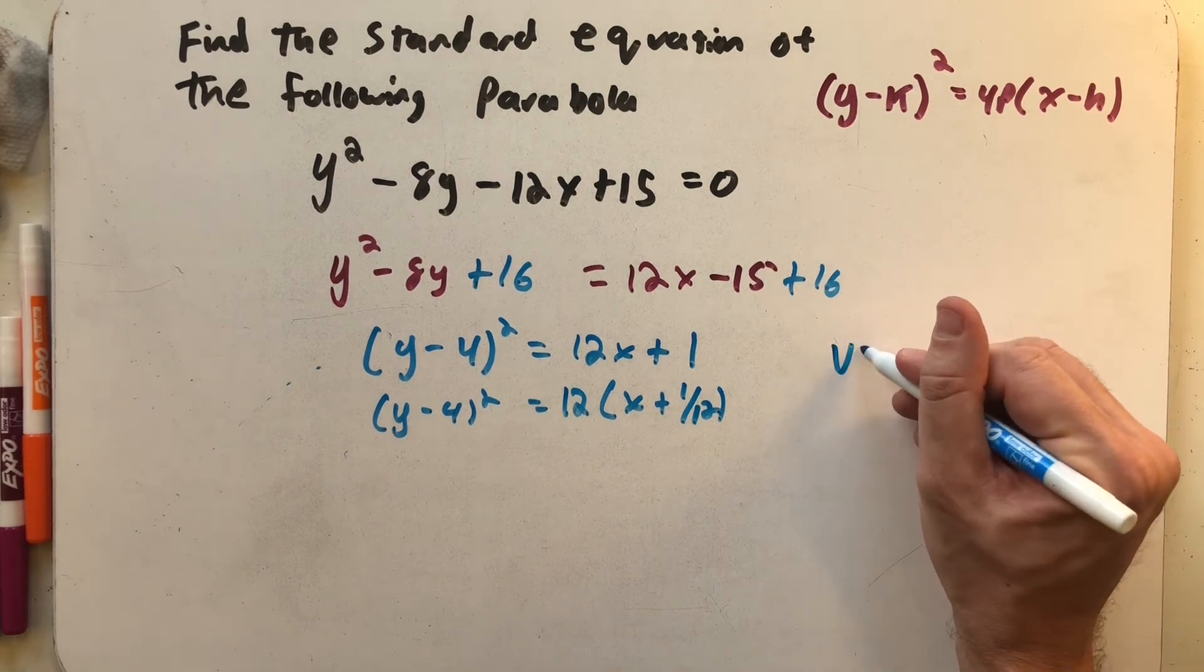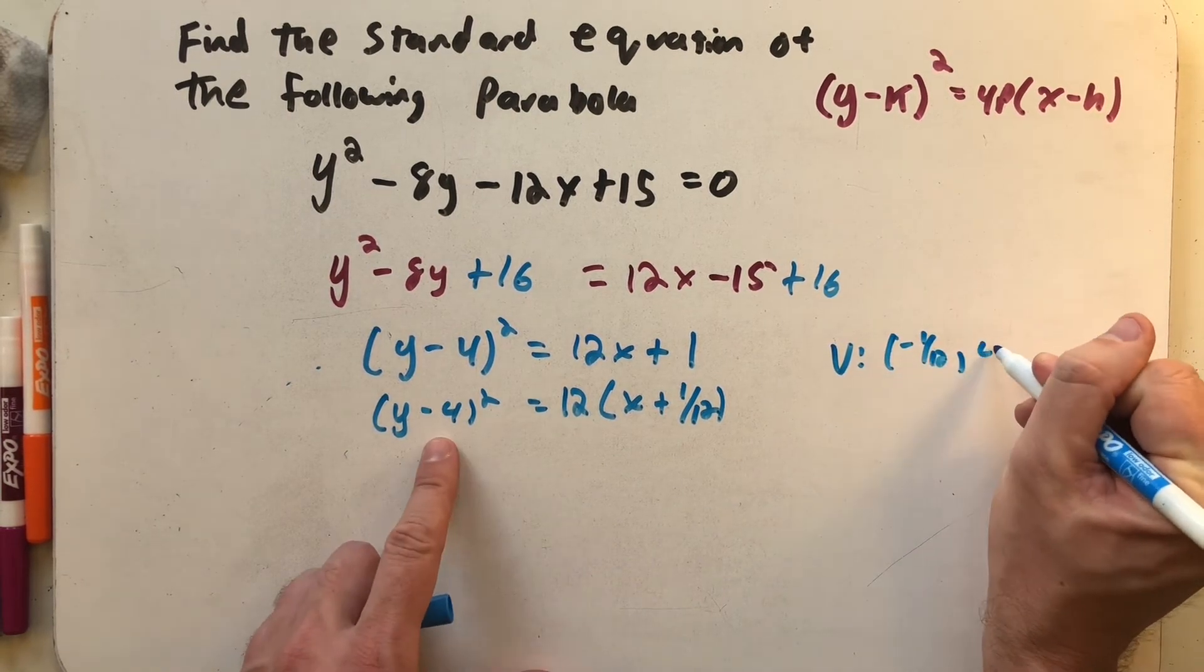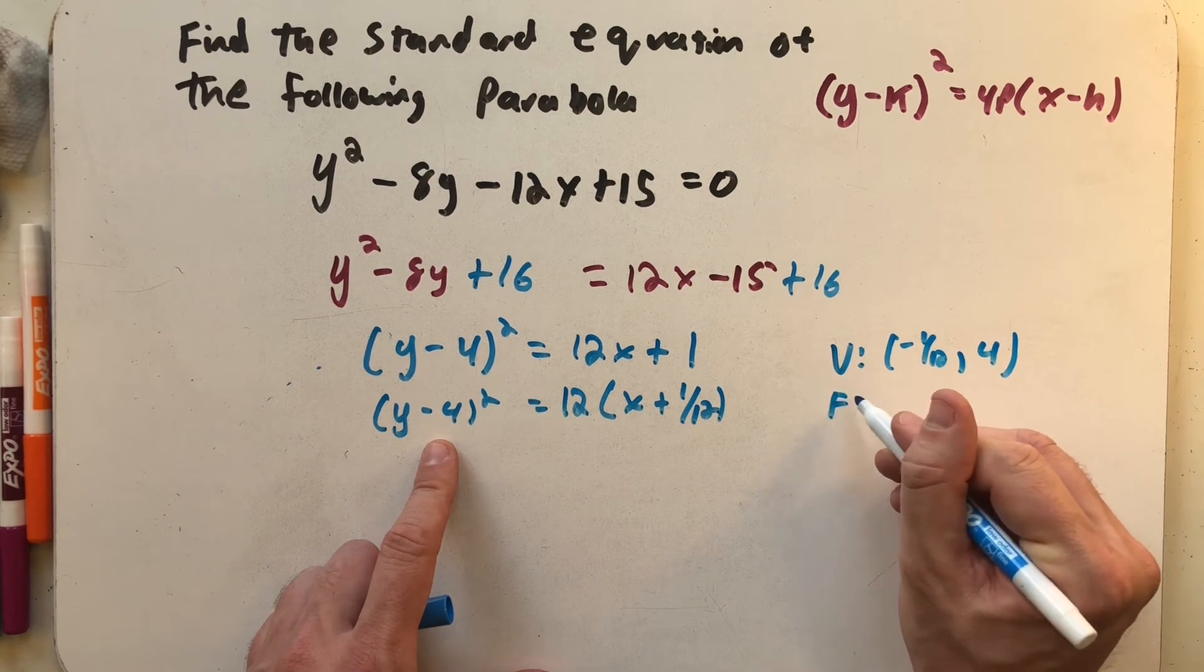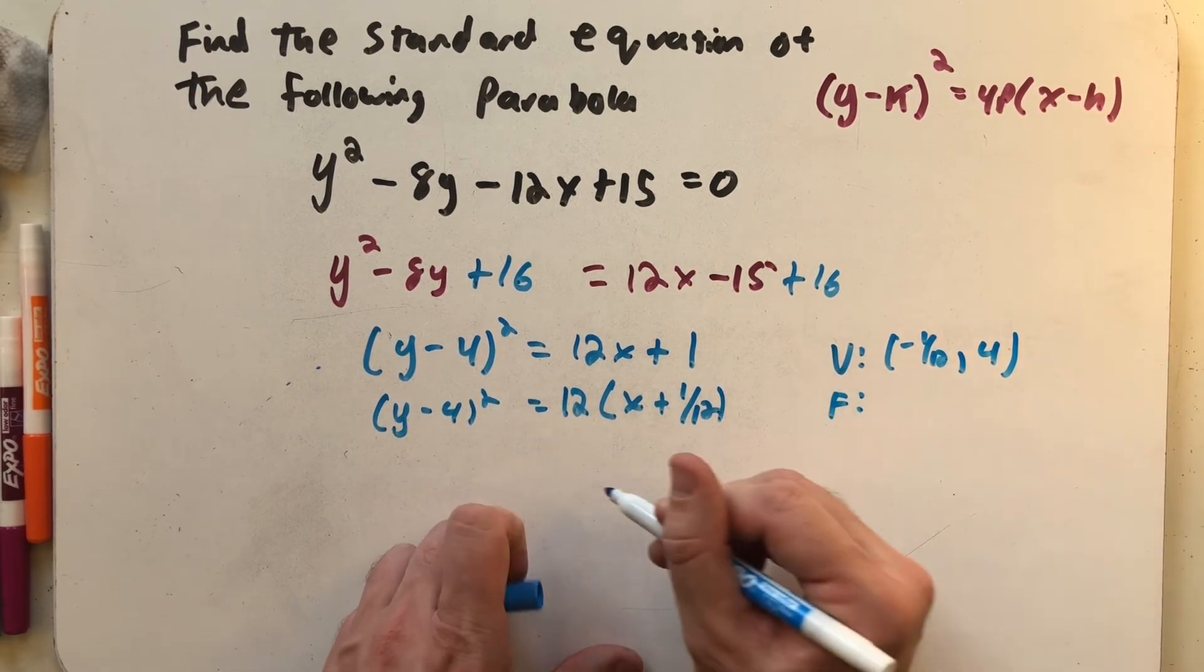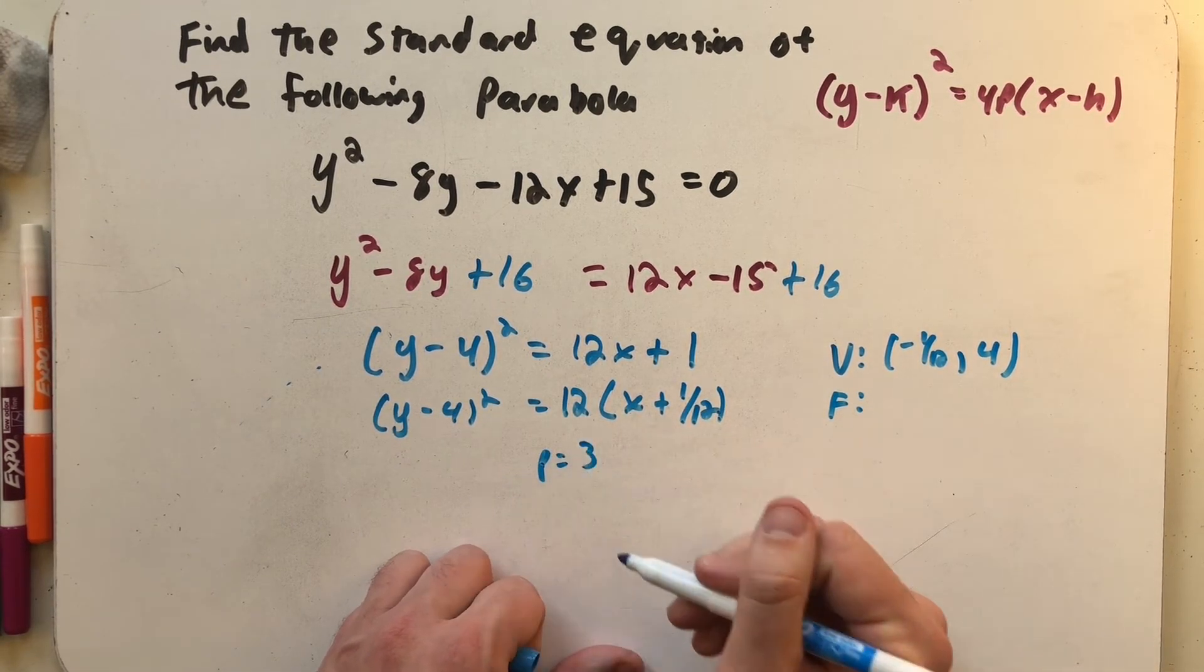And so from here, we can write down where the vertex is at (-1/12, 4). We can even go through and find where the focus is, because now I know that p is equal to 3.